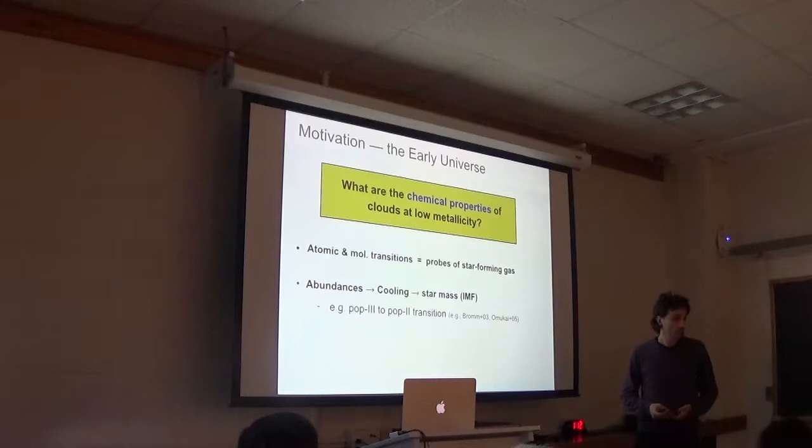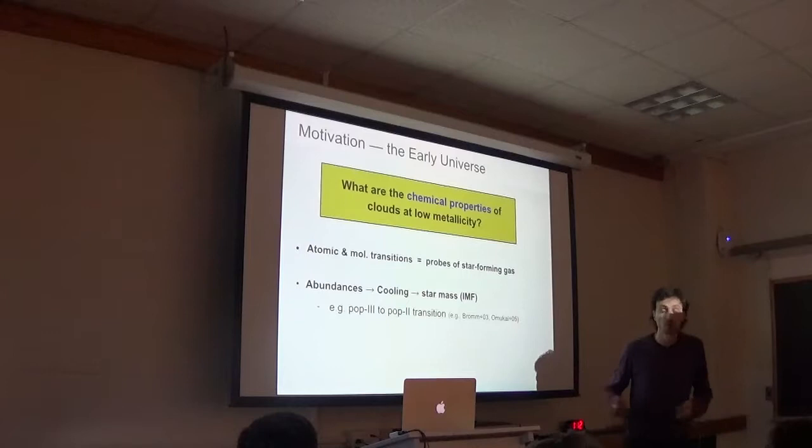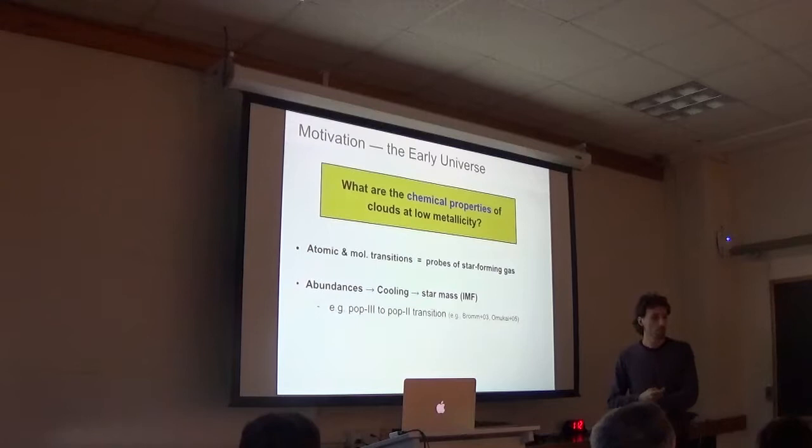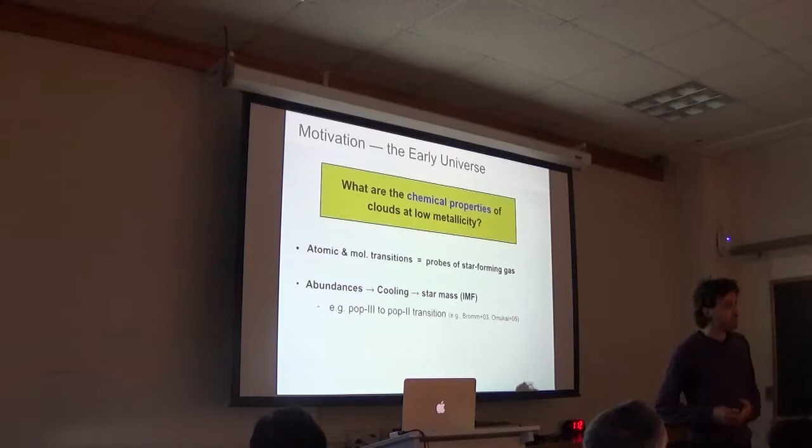From observational point of view, we see such evidence, for example from Lyman alpha absorbers at high redshifts, which can have metallicities of about 0.1% of solar. And also in our galaxy, we have low metallicity stars which can have almost 10 to the minus 5 relative to solar metallicity. So the basic question I want to address in this talk is, well, what are the chemical properties of such low metallicity clouds in the early universe?